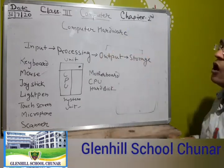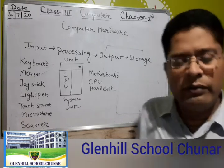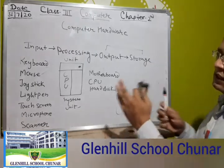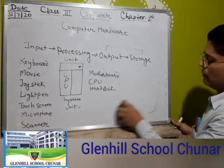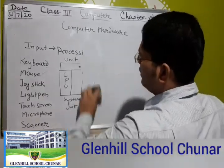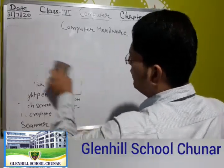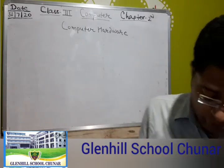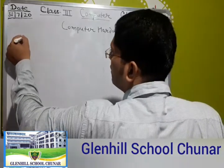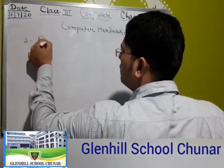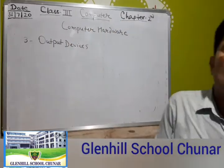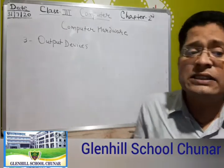That covers input and processing. Today we will discuss output devices and storage devices. This is a revision of Chapter 2: Computer Hardware — what is input, examples of input devices, what is processing, and where the computer does the processing.